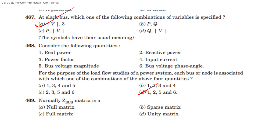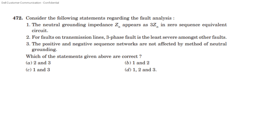Question 5: The Z-bus matrix is a full matrix. Consider the following statements regarding fault analysis: neutral grounding impedance ZN appears as 3ZN in the zero sequence equivalent circuit. For fault on a transmission line, three-phase fault is the least severe among other faults. The positive and negative sequence networks are not affected by the method of neutral grounding. Statements 1 and 3 are correct.